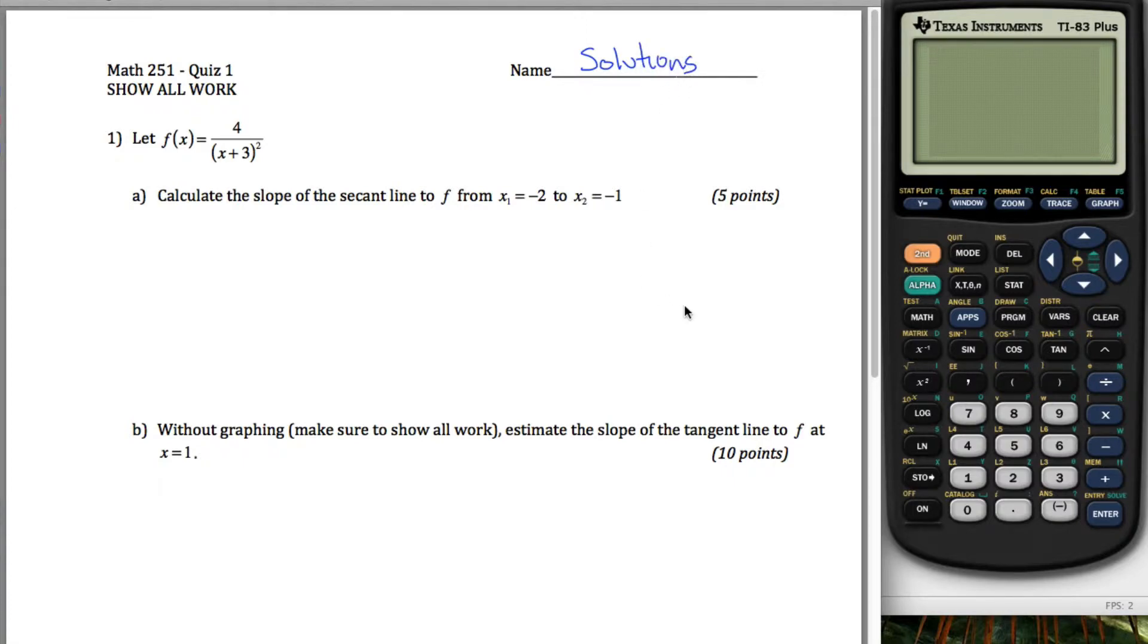All right, here are solutions to quiz one for Math 251. For part A here, you're asked to calculate the slope of the secant line to this function and given two values.